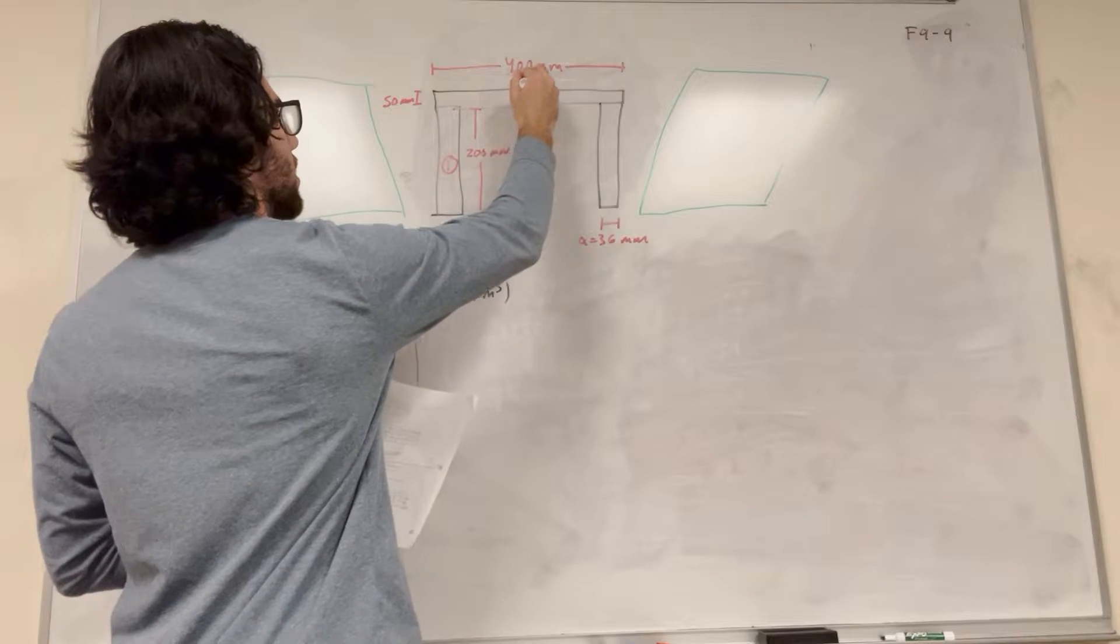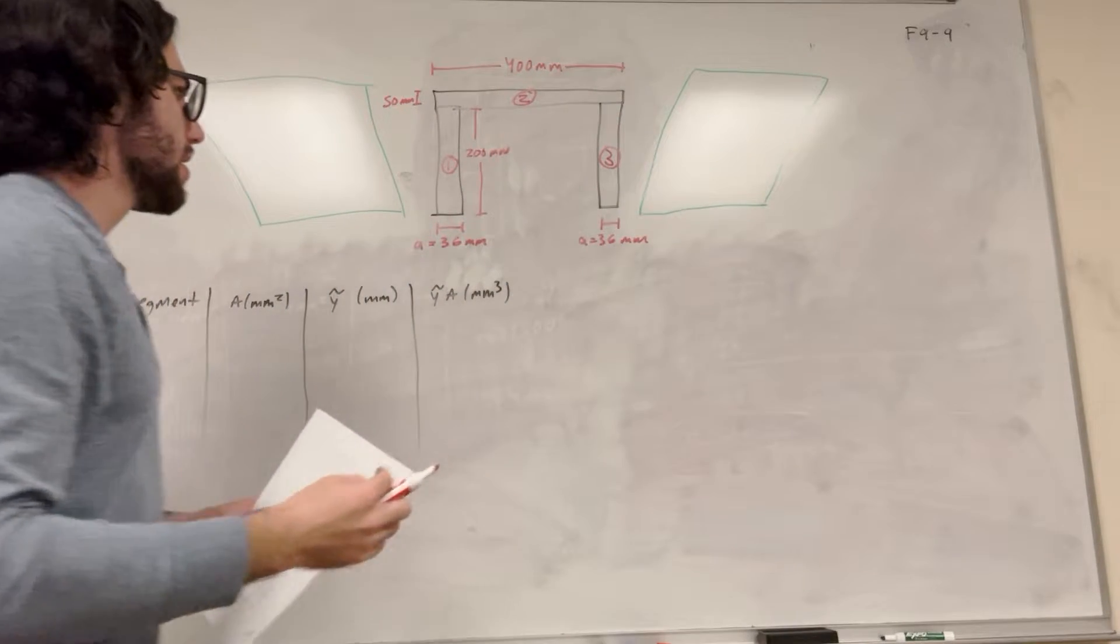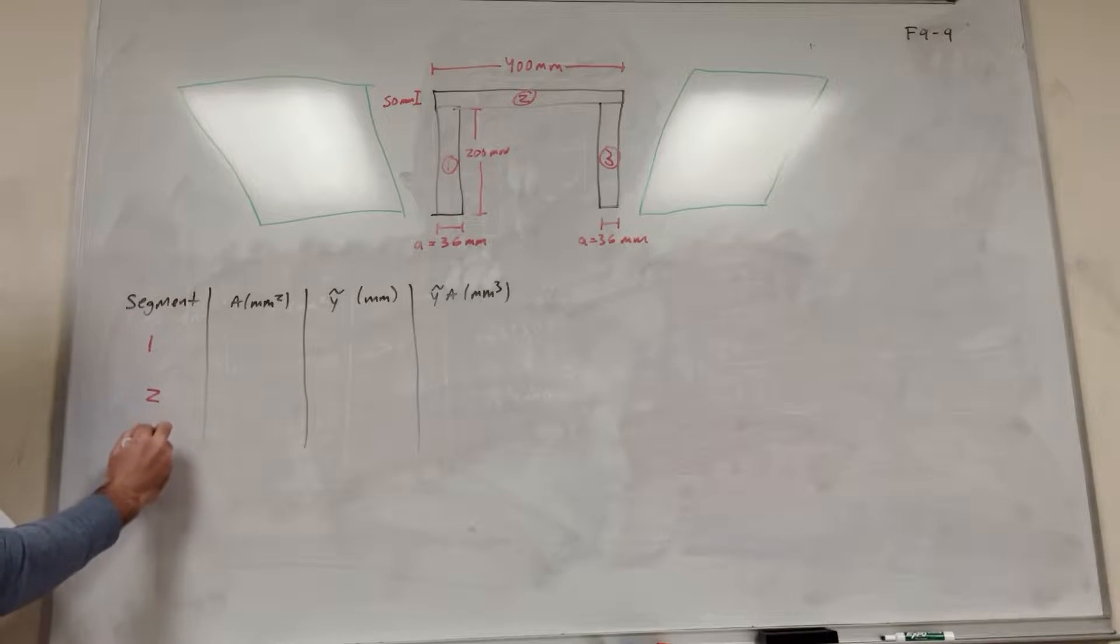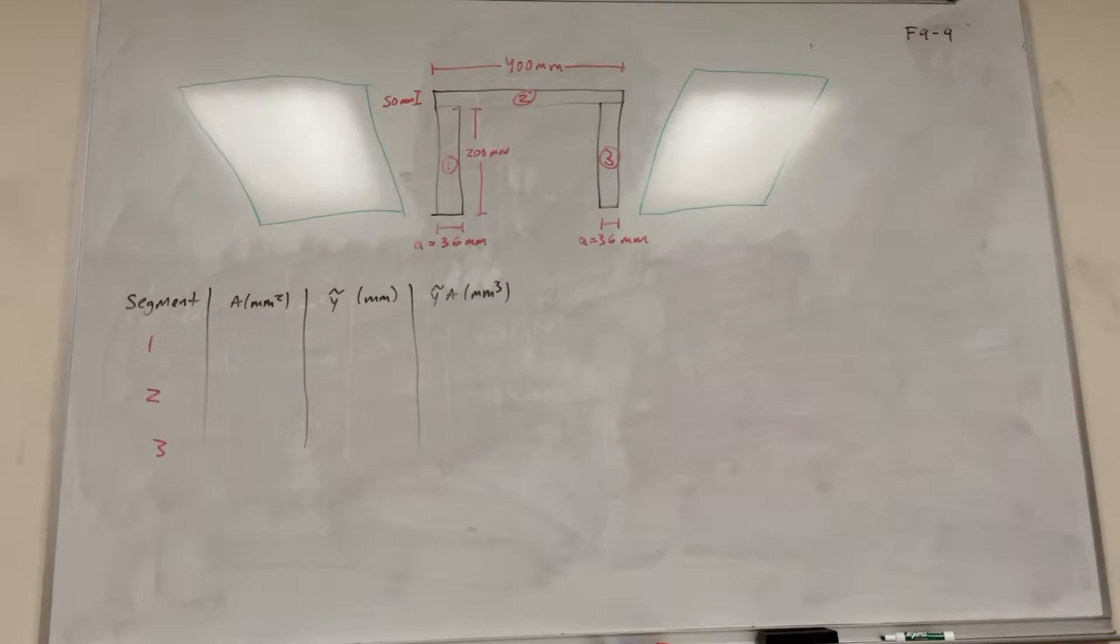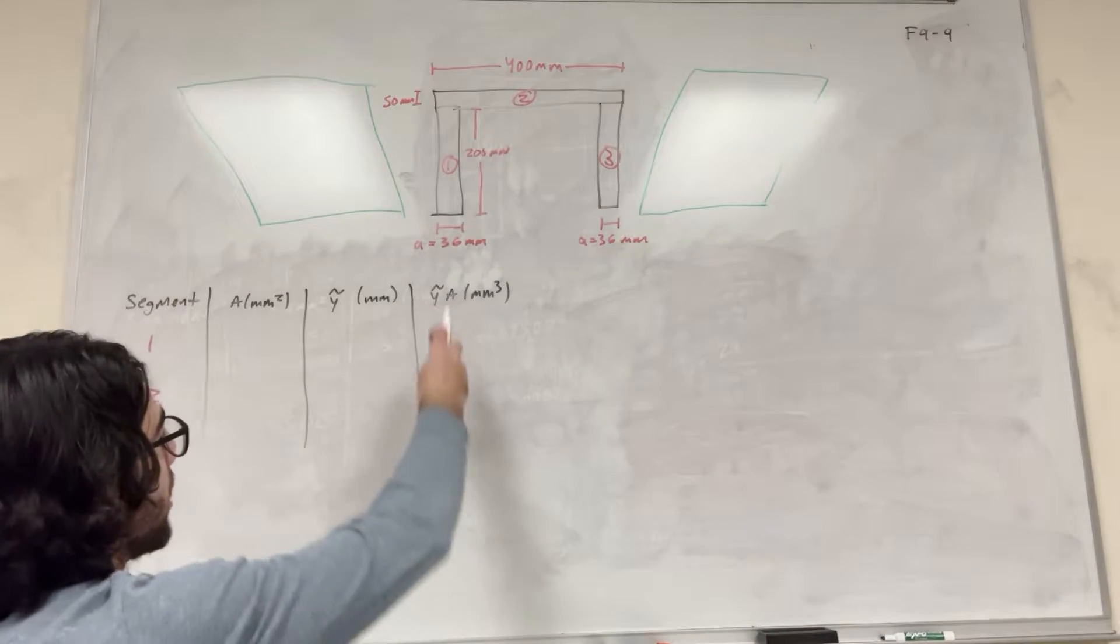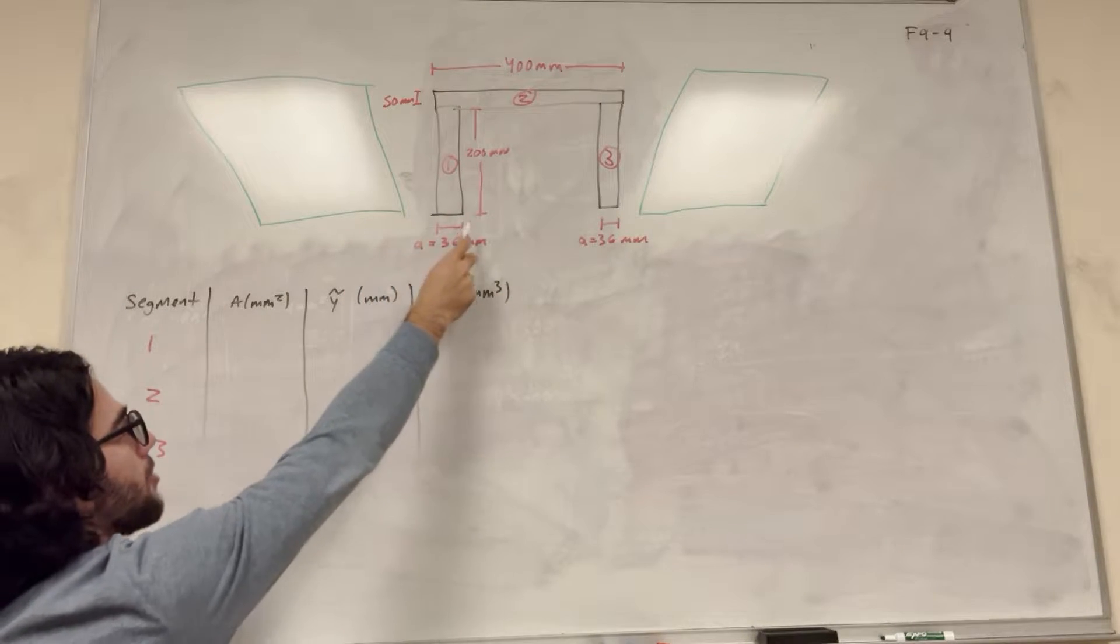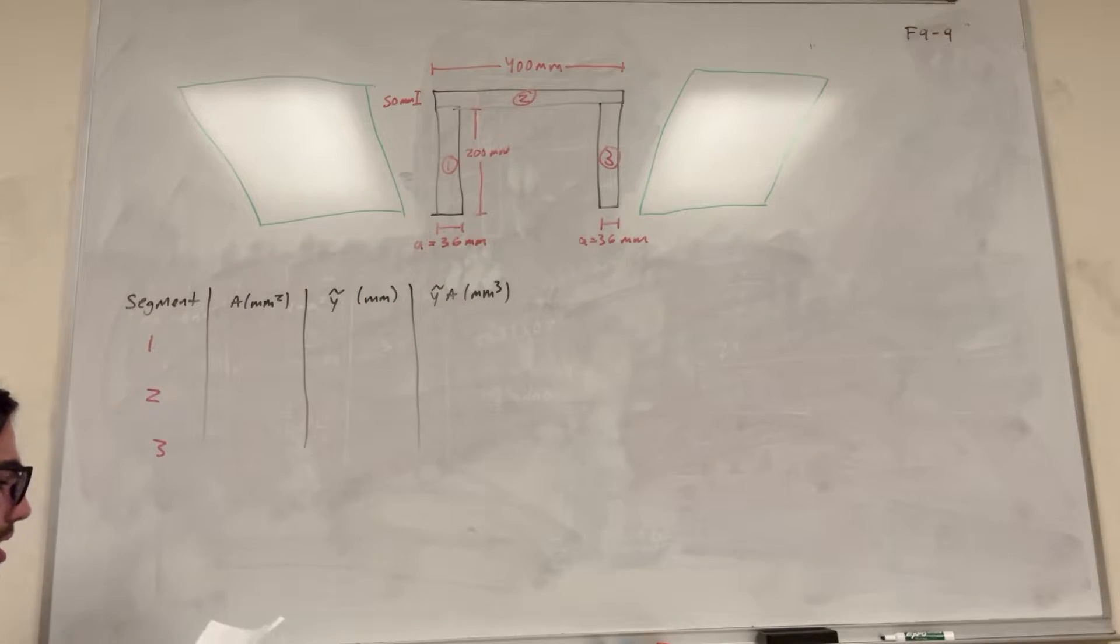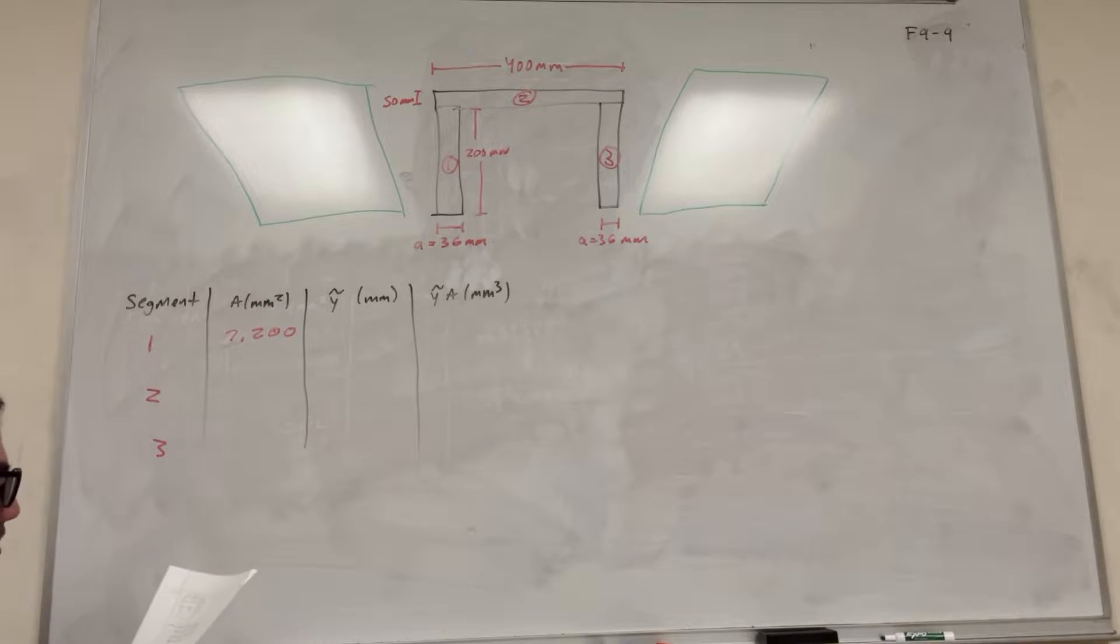So we have, let's label this section 1, label this section 2, and label this section 3. So we have now segment 1, 2, 3. So now, all we have to do is find the area of each one of those and the center mass of all of those, and then use a formula. So the area of segment 1, it's just going to be width times height, so it'll be 36 times 200. So 36 times 200 is 7,200 millimeters squared.